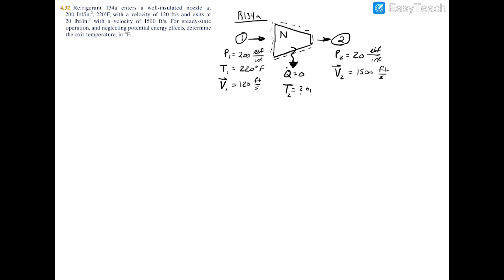Right now we have one thermodynamic property at the exit being 20 psi. The velocity is not something you can use to access the property tables directly, however it gives us kinetic energy. When we apply the first law of thermodynamics and balance all the energies, we'll be able to find the temperature — specifically by finding the enthalpy and relating it to temperature. So let's write down the first law formula: zero equals heat transfer minus power.